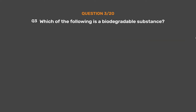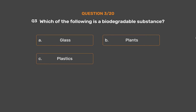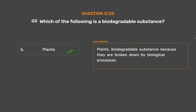Question number 3: Which of the following is a biodegradable substance? Option A: Glass, Option B: Plants, Option C: Plastics, Option D: Polythene. The correct answer is Option B, Plants. Plants are a biodegradable substance because they are broken down by biological processes.